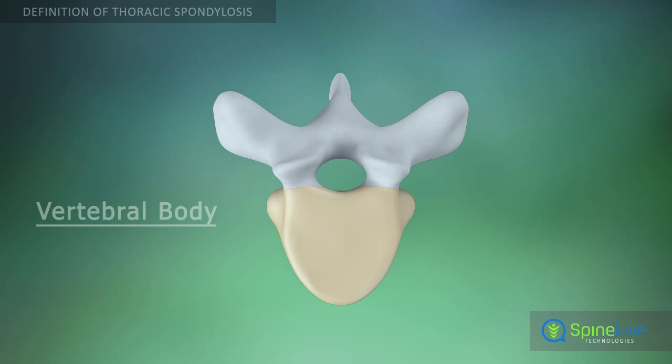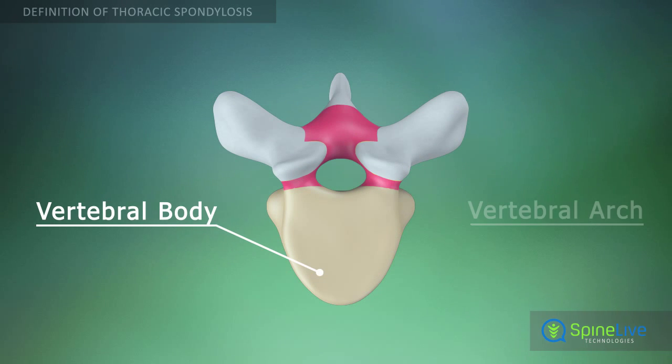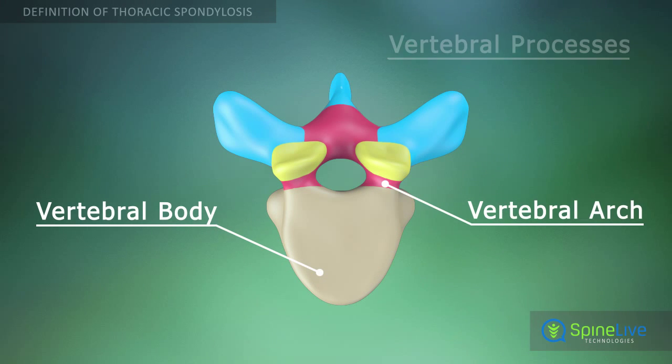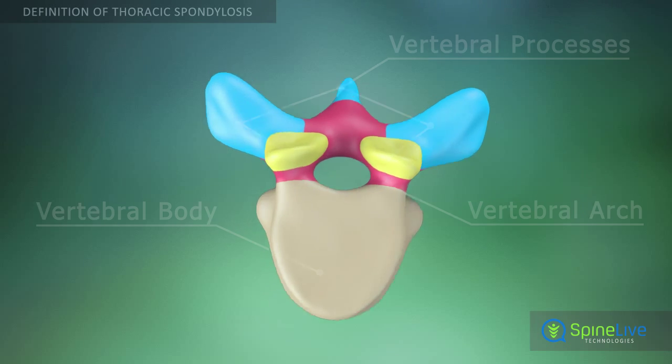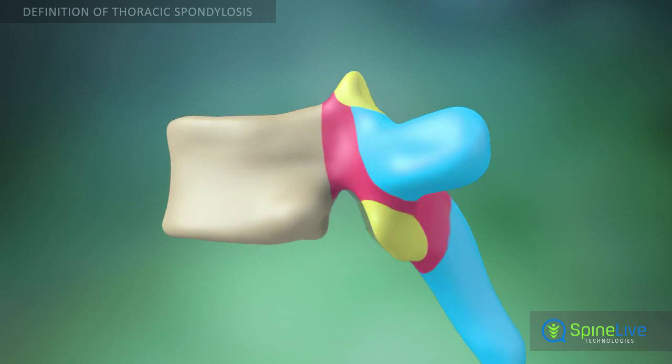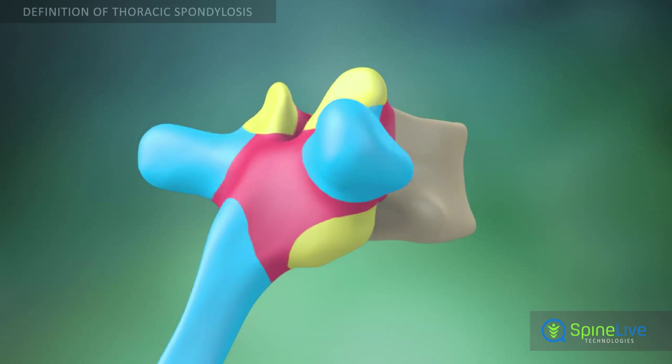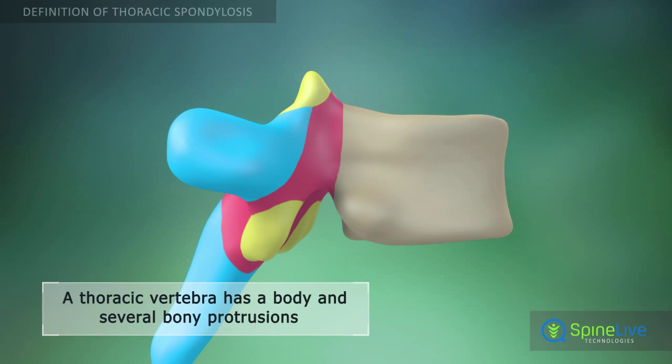A typical thoracic vertebra consists of a body and a vertebral arch, which has several processes for articular and muscular attachments.